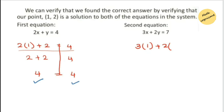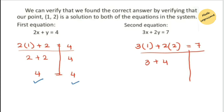Substituting x equals 1 and y equals 2 into equation 2: 3 times 1 equals 3, and 2 times 2 equals 4. When we add these we get 7 on the left-hand side, and there is a 7 constant on the right side. Both solutions satisfy both equations.